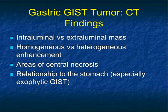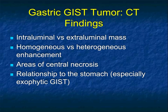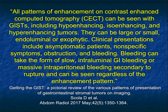Aggressive GIST tumors can invade locally, going to the omentum or mesentery. From a CT perspective, I think about those that are intraluminal versus extraluminal. The majority are extraluminal, and often the largest lesions are extraluminal. One of the challenges is that GIST tumors are often misdiagnosed — they seem to abut the stomach and may appear to arise from the pancreas, retroperitoneum, or adrenal. I'll show you cases to help avoid that mistake.